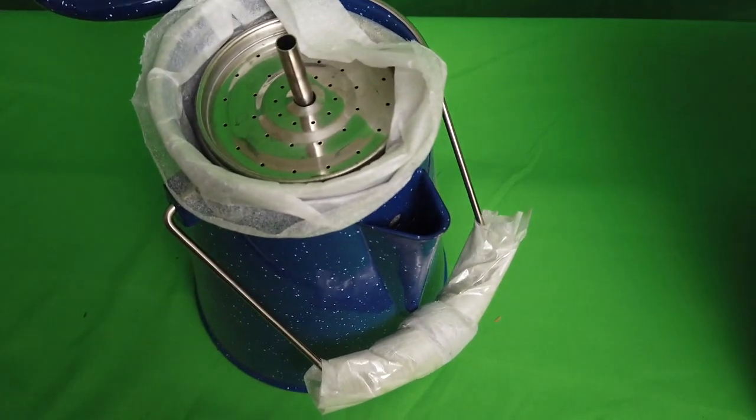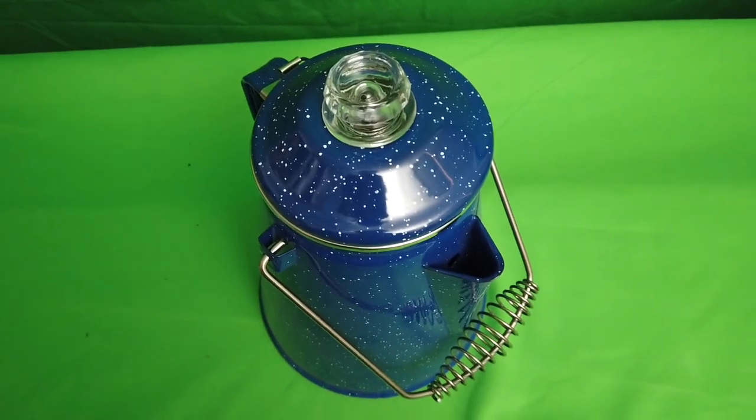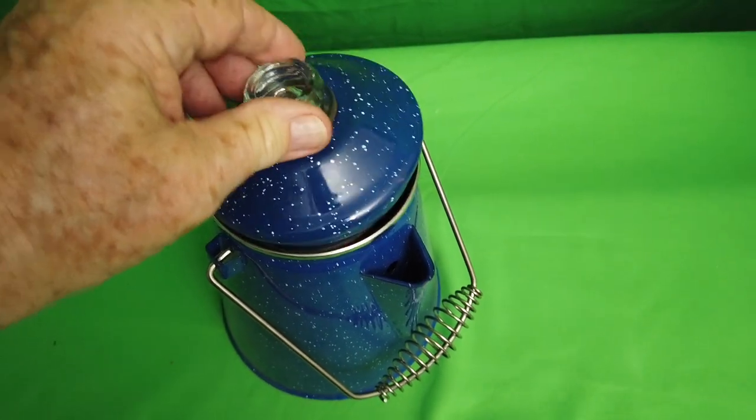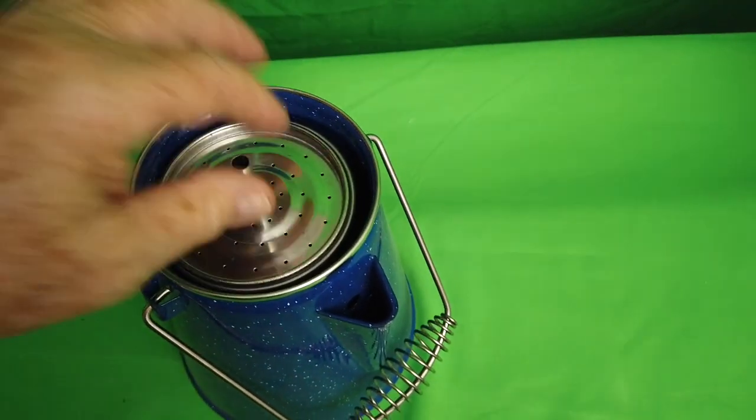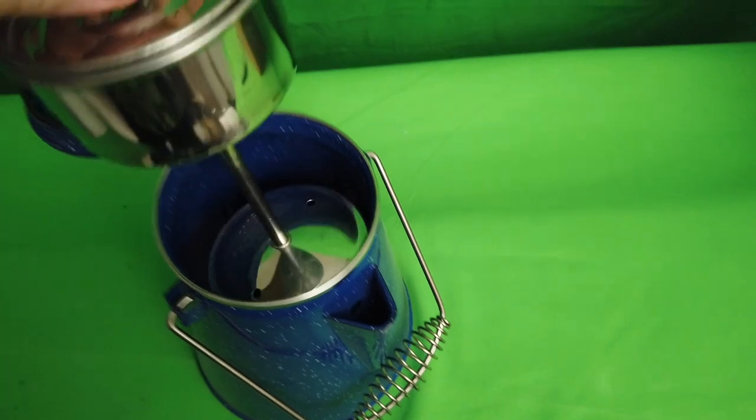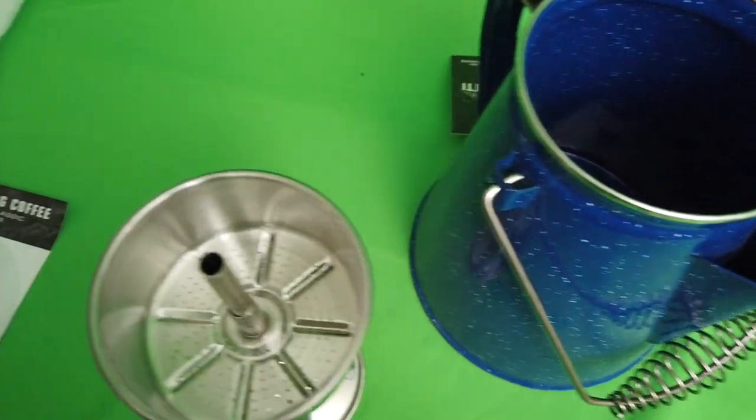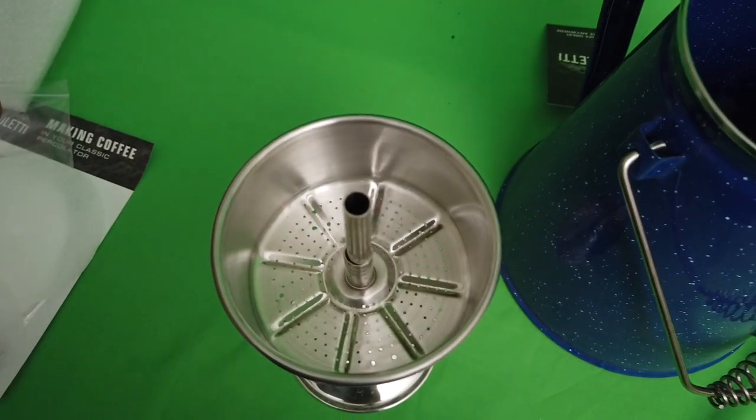So to set it up, I've already put the glass handle into the lid - it just twists and locks in place. You've got your basket here, you put your filter in there and your coffee grinds.